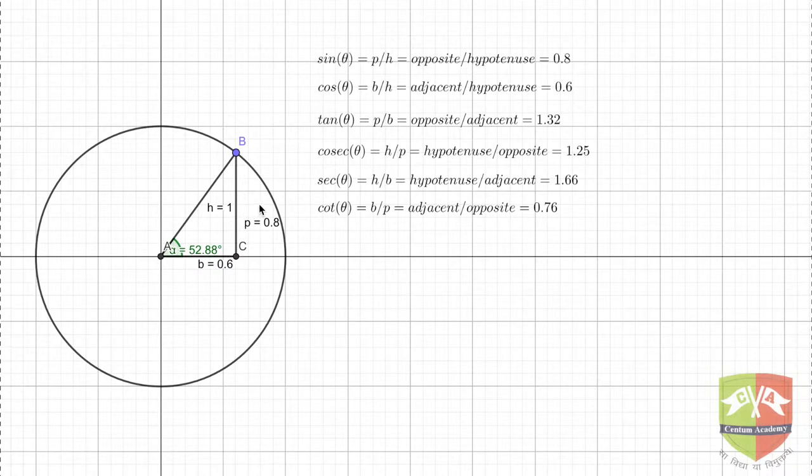Here angle BAC is 52.88 degrees. At different values of angle, what are the values of trigonometric ratios? We are interested to know. We are not going to discuss all angles, only some specific angles, because there will be infinitely many possibilities of angles and for that there will be six ratios for all angles.